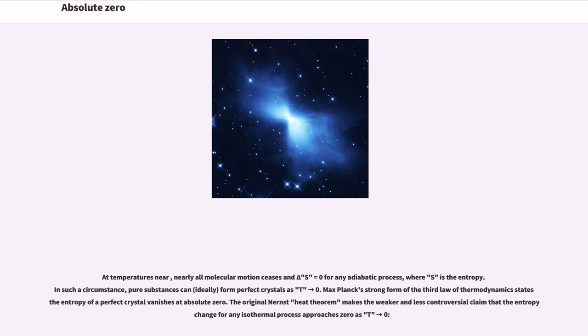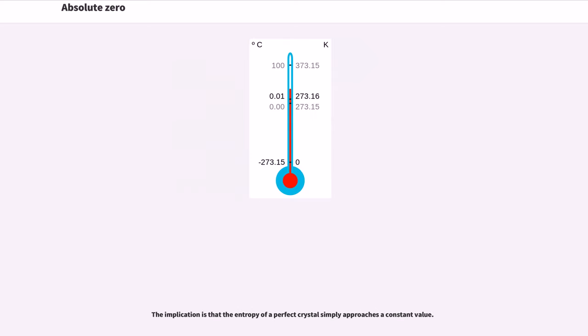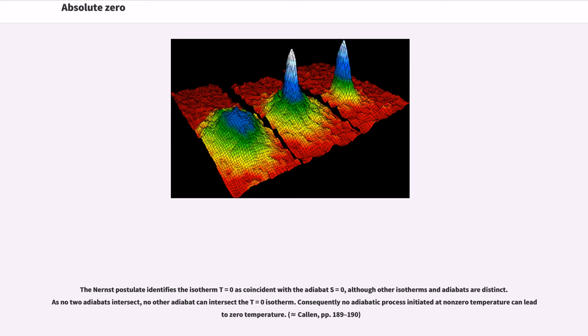The original Nernst theorem makes the weaker and less controversial claim that the entropy change for any isothermal process approaches zero as T approaches zero. The implication is that the entropy of a perfect crystal simply approaches a constant value. The Nernst postulate identifies the isotherm T equals zero as coincident with the adiabat S equals zero, although other isotherms and adiabats are distinct. As no two adiabats intersect, no other adiabat can intersect the T equals zero isotherm. Consequently no adiabatic process initiated at non-zero temperature can lead to zero temperature.